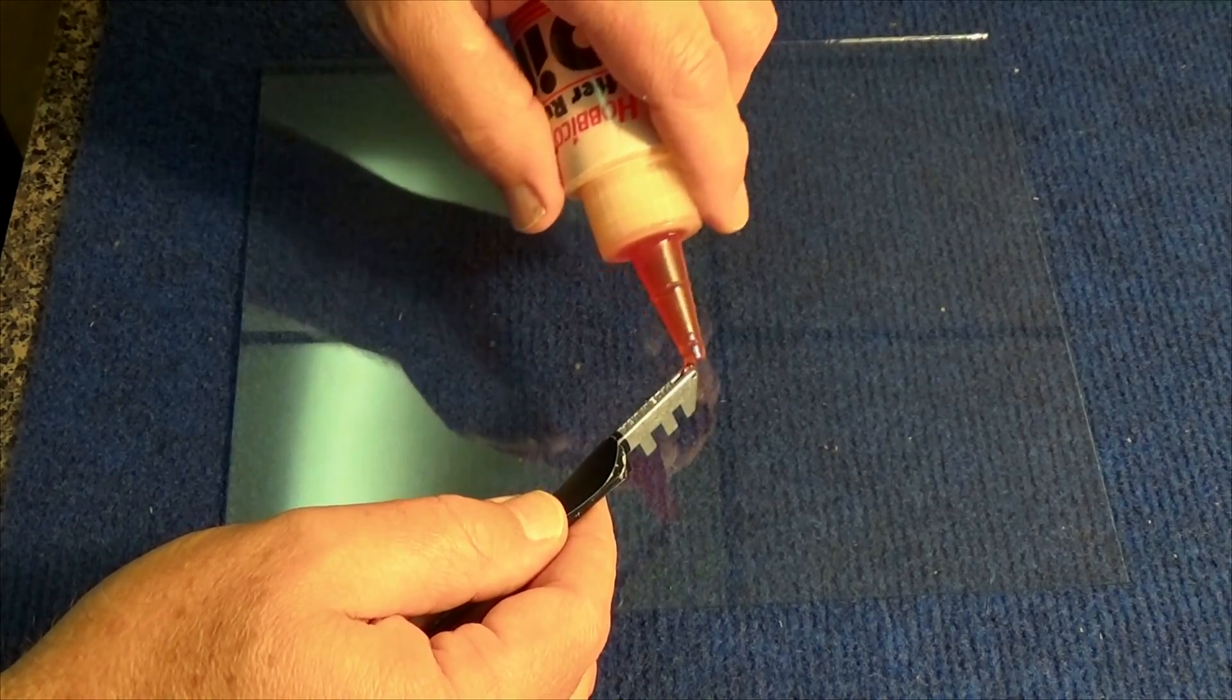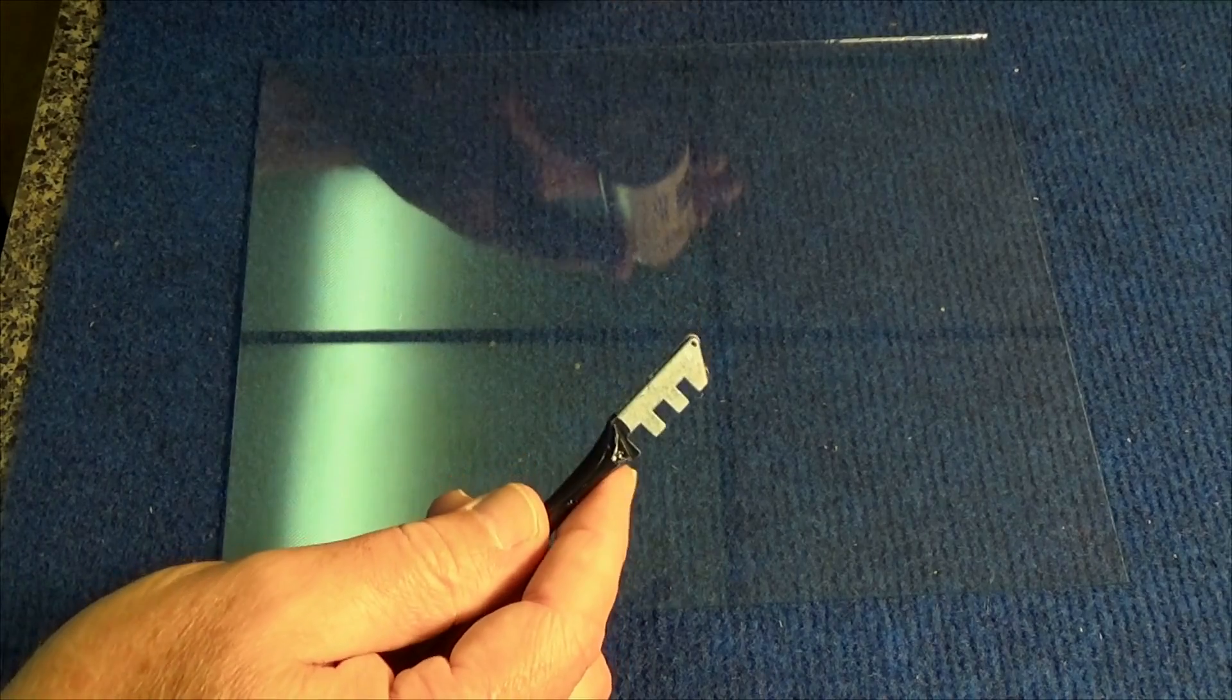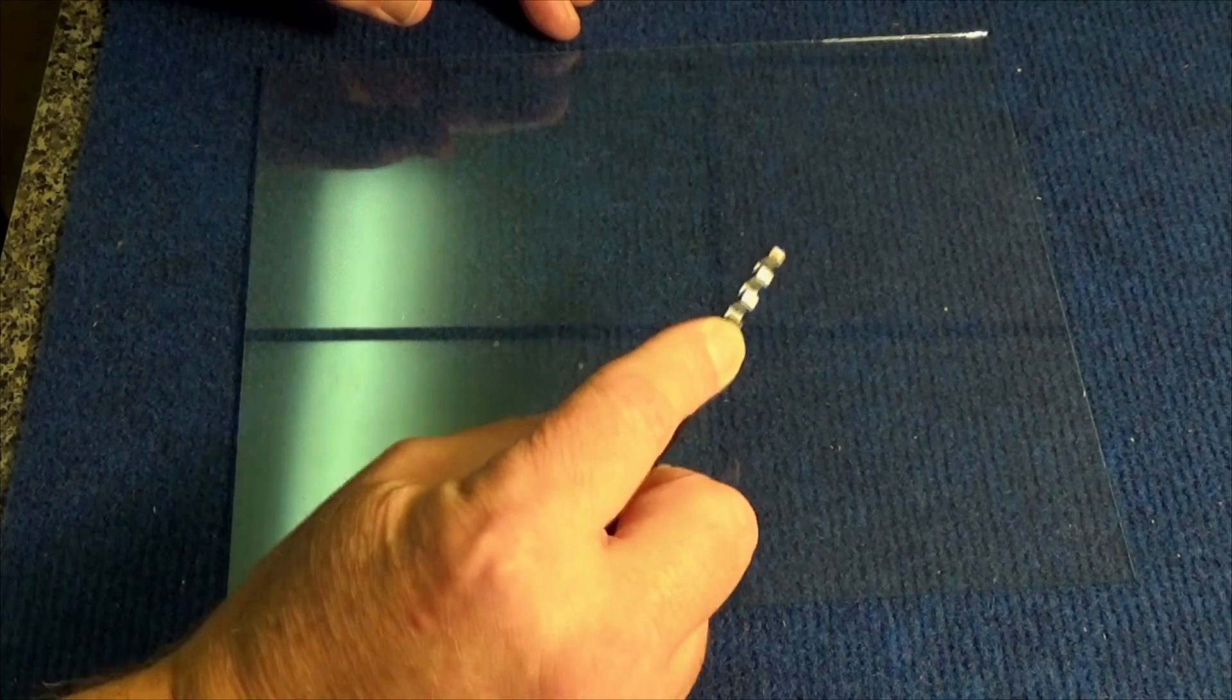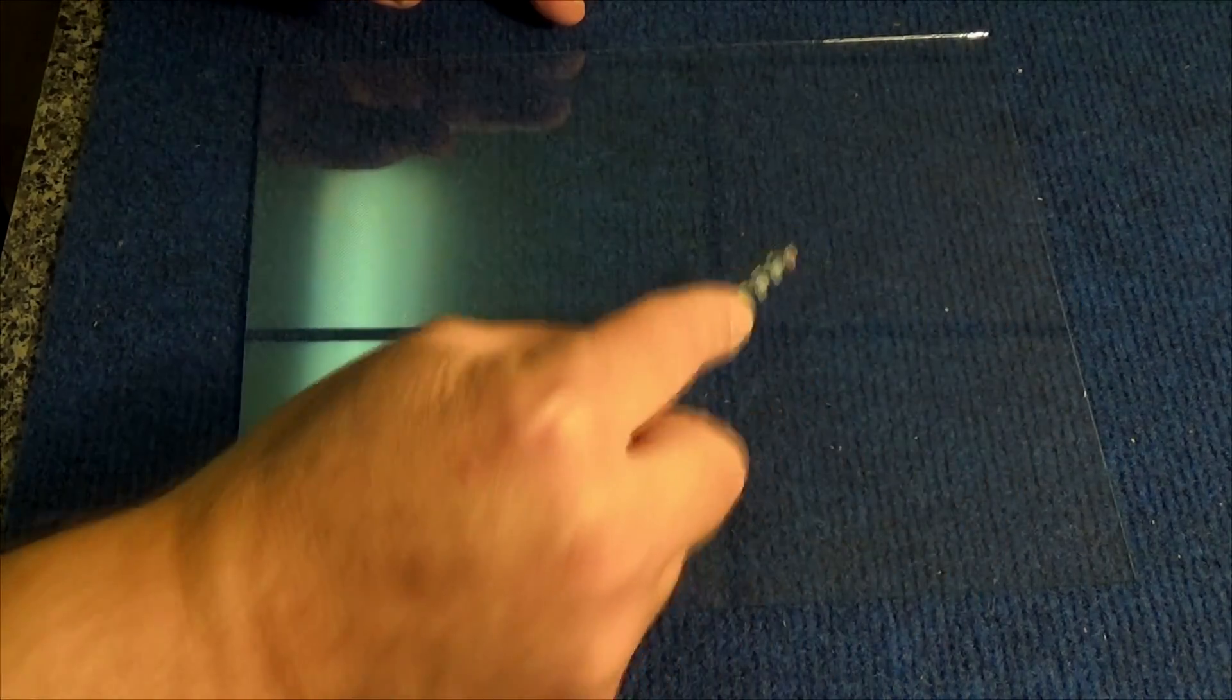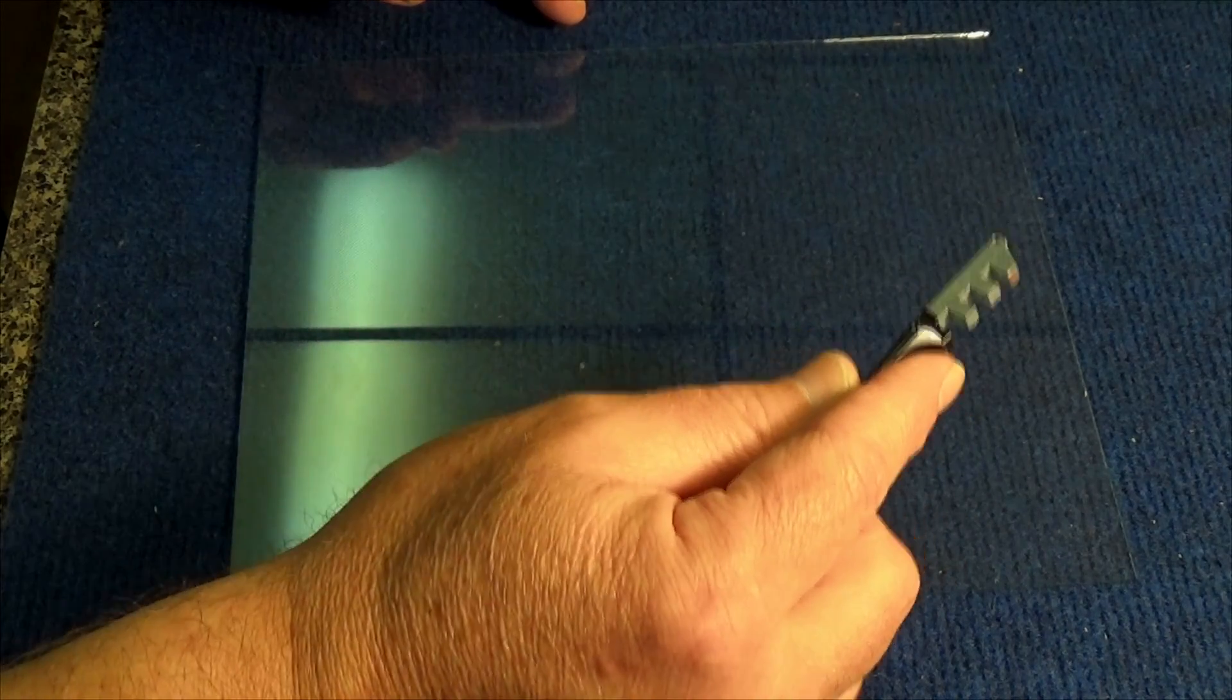I put it on the wheel itself, just like that. Now when you do this, you want to hold it like this so you can apply pressure. Once you make a score line, you don't want to go back over it. This is a one-shot deal.